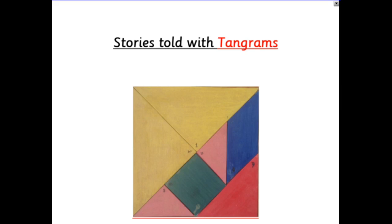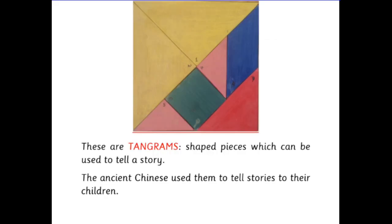This is a story using tangrams. Now tangrams, as you can see on the diagram, there are seven of them and these are called tans. These tans can be shaped together to make animals or people or numbers, and they were used by the ancient Chinese to tell stories to their children.